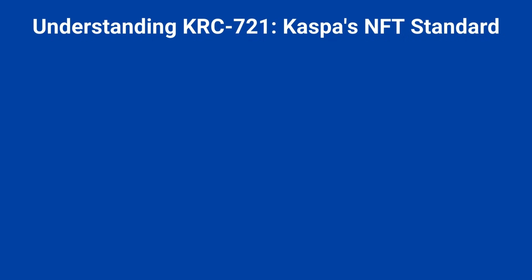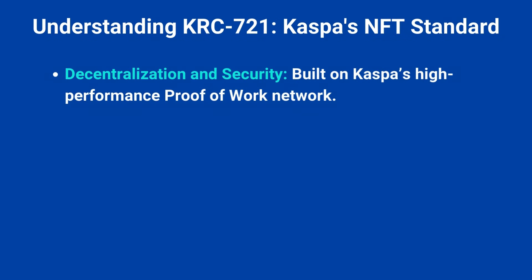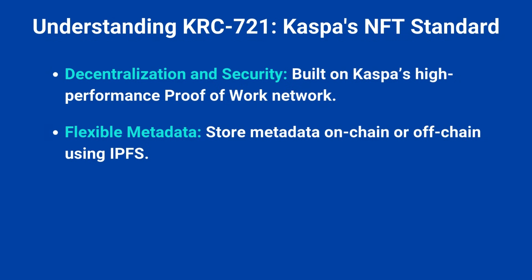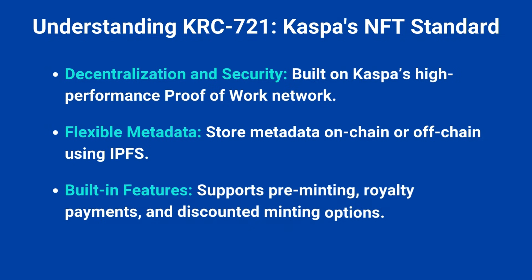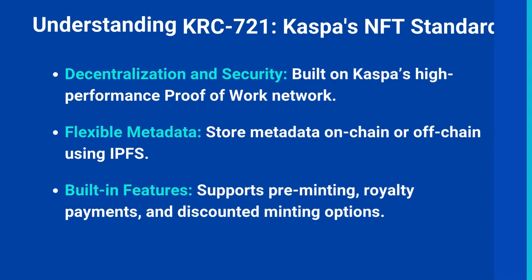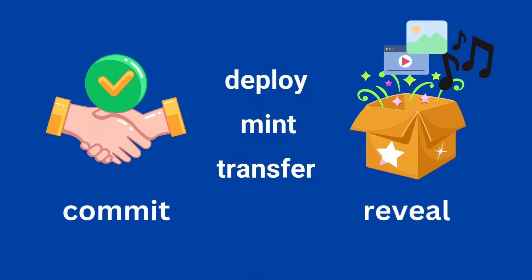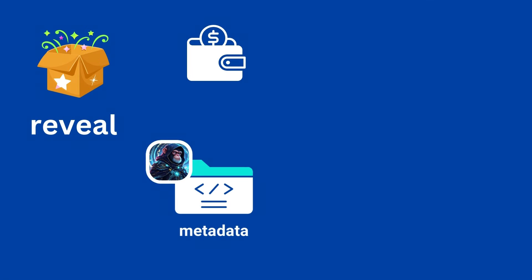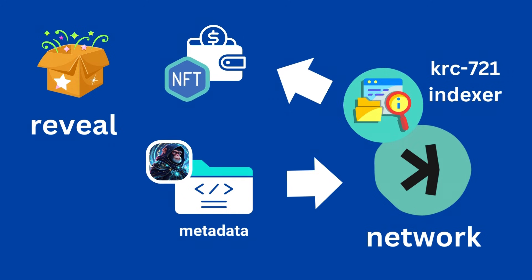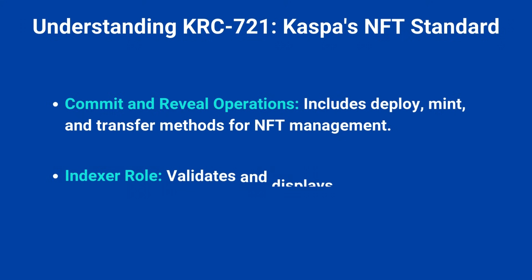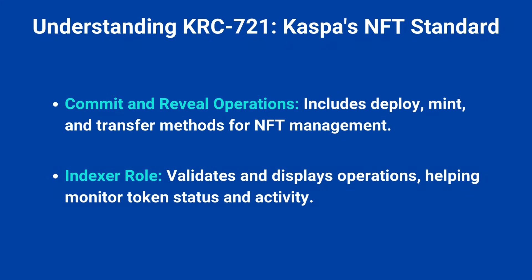KRC 721 is Kaspa's standard for creating and managing non-fungible tokens. It leverages Kaspa's high-performance proof-of-work network for decentralization and security, offers flexible metadata storage options — on-chain or off-chain using IPFS — and supports advanced features like pre-minting, royalty payments, and discounted minting. These features enable the creation of unique, scalable NFT collections while keeping the Kaspa chain efficient and fast. KRC 721 operates through a commit-and-reveal process with three key operations: deploy, mint, and transfer. When an operation is submitted to the chain and validated, the KRC 721 indexer creates the data and makes it accessible via APIs. This allows users to verify operations, check token statuses, and track activities such as pre-minting or remaining mintable supply.